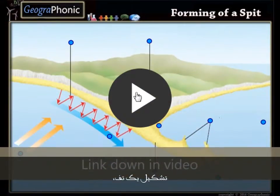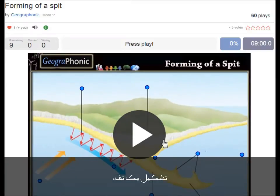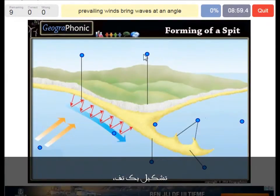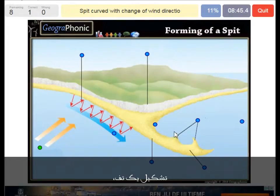You can play this game yourself. The prevailing winds bring waves at an angle — that's what we see here. The spit is curved with the change of the wind direction, and that is what we can see here.